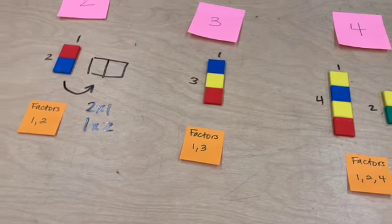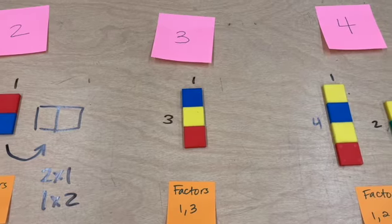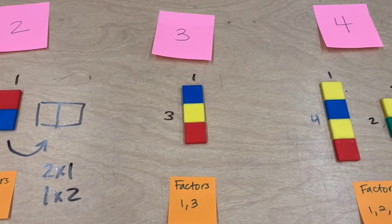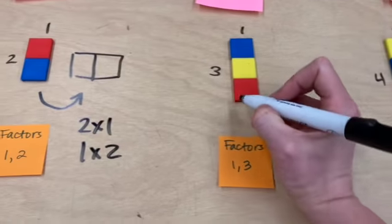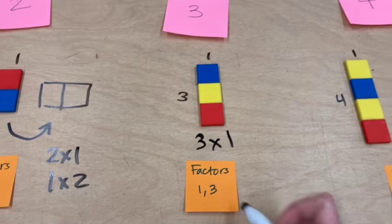Now let's come over to the rectangle for number 3. Here we've got 3 tiles. With 3 tiles we could only make one rectangle and its dimensions are 3 by 1, so the factors are 1 and 3.